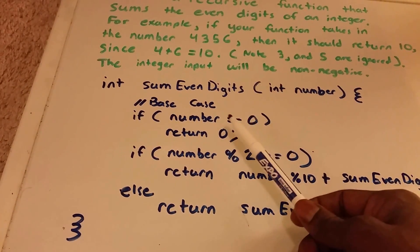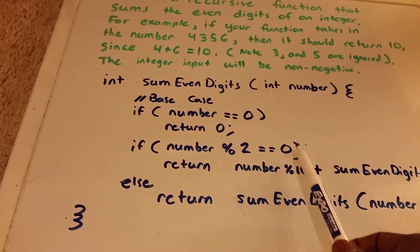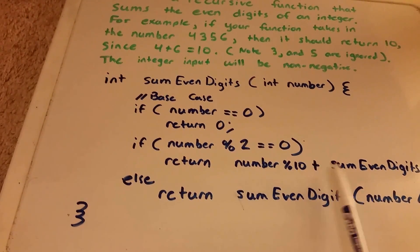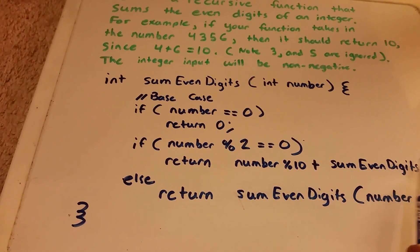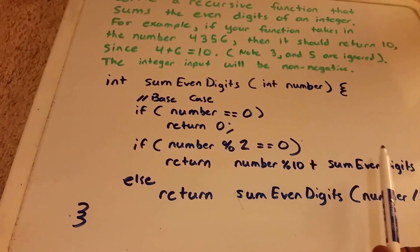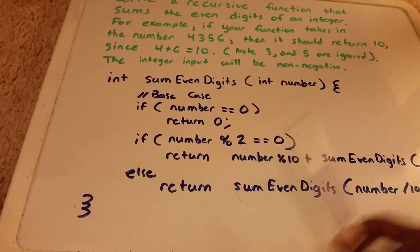The number equals 0? No, it doesn't. The number is 4. 4 mod 2 is even, yes. So now we add 4 to our SumEvenDigits, and we get 6 plus 4, which equals 10.